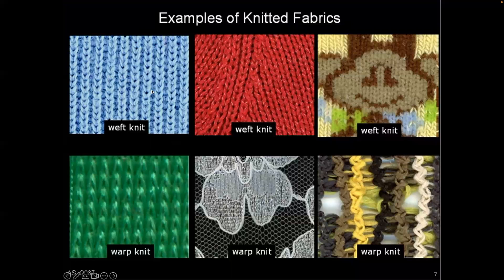The ones on the top are weft knits — you can see the loops very clearly. The ones at the bottom are warp knit fabrics, and you can see the vertical direction of the loops. This is a lace fabric, and this is also a warp knit.